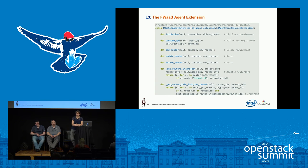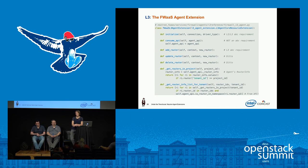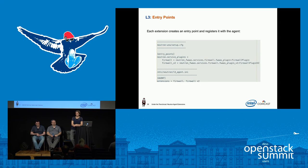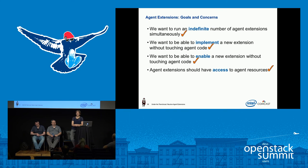Here's the extension — it implements the interface, takes in the agent API and assigns it to self, implements the router-specific methods, and elsewhere in the code calls methods of the agent API to receive information about the router info object. Finally, to set up an entry point, you create it in your setup.cfg and tell the agent it's there. With the combination of these two tools, all the concerns we identified are satisfied.